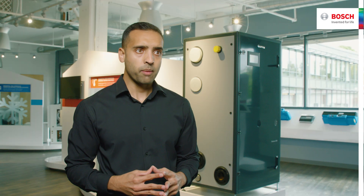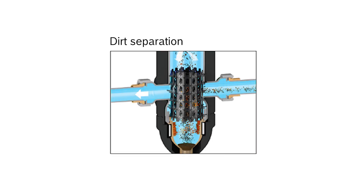Upon entering the Low Loss Header, impurities in the fluid strike the surfaces of the SSP Low Loss Header's internal dirt separation element. They get separated and drop to the bottom of the body where they are collected.